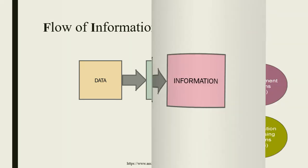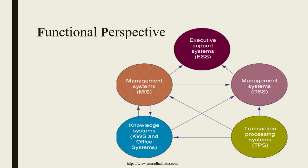From this flow of information, we have the functional perspective. You have a Management Information System at one end that provides input to the Executive Support System, known as ESS. It also gives input to the management system, that is the Decision Support System, which also gives its information input to the Executive Support System. So there is a chain formed between MIS, ESS, and DSS — they are all related to each other.